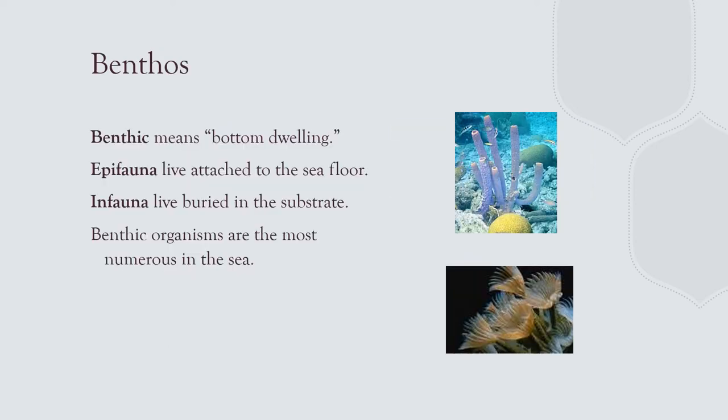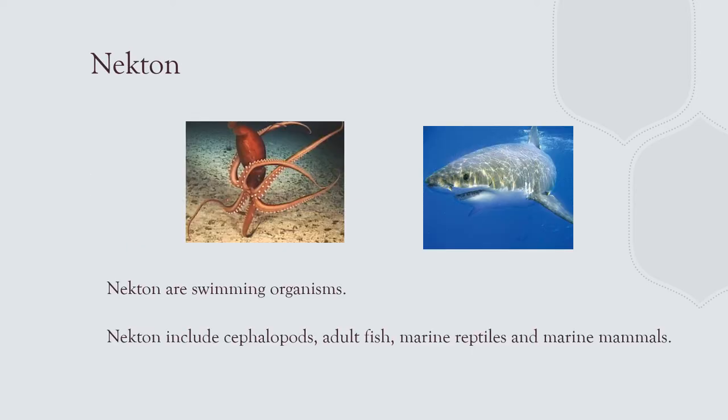Benthos — benthos means bottom-dwelling — refers to organisms that live attached to or buried in the seafloor: epifauna and infauna. Nekton means swimming organisms that can move against the current under their own propulsion. Demersal fish like the flounder live on the bottom — they can swim but spend time in a benthic lifestyle as well. Nekton refers to organisms that can self-propel and don't rely on currents for their motility.